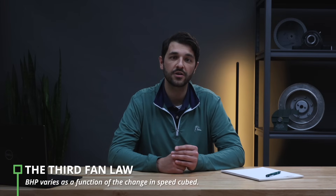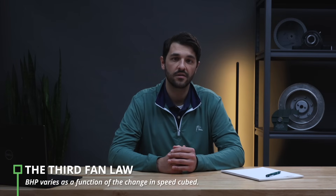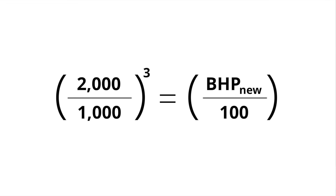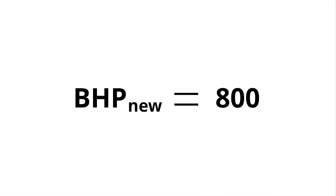The third fan law describes how brake horsepower changes in response to a change in speed. Here, the horsepower changes as a function of the change in speed cubed. This exponential impact on power consumption is useful in determining how much headroom a fan assembly has for speed increase before exceeding the motor's rated capability. In our example, the equation is: (2,000 RPM / 1,000 RPM) cubed equals the new brake horsepower X divided by the old brake horsepower 100 — which solves for a new power consumption of 800 BHP.